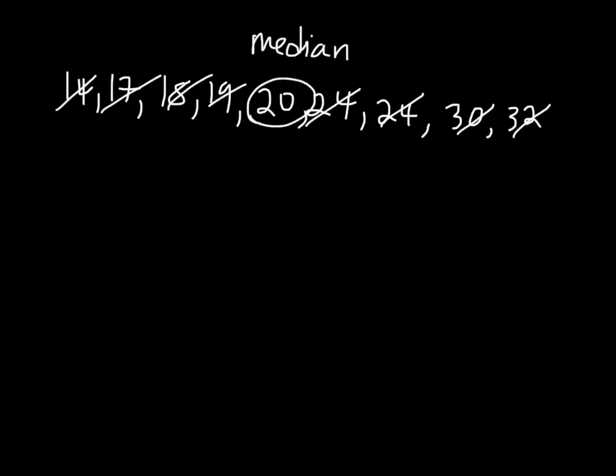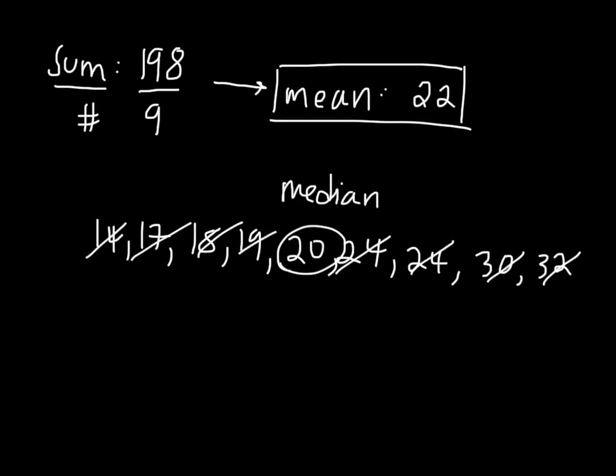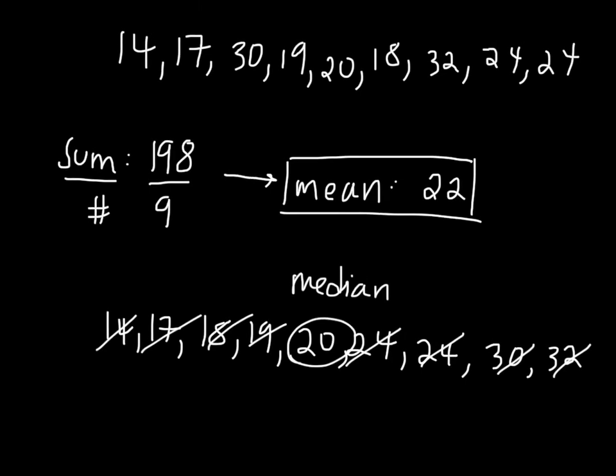Finally we can just glance at our line to see which is the most occurring number, and in this case our mode is 24.